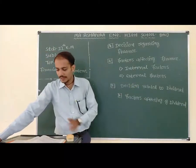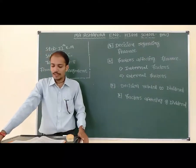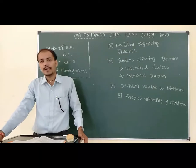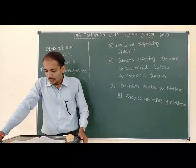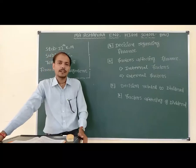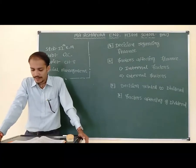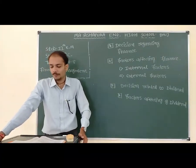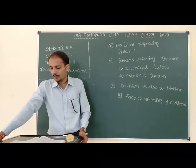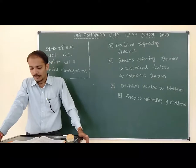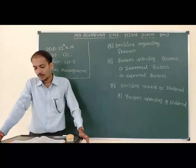Next, decisions related to dividend. Dividend is a part of the profit of the company which is distributed among its shareholders. Dividend is a return to shareholders on their investment. A dividend can be paid in cash, cheque, or paid-up capital. The financial manager has to decide what part of profit should be distributed as dividend and what part should be retained in the business.